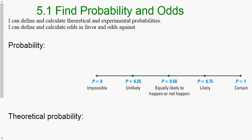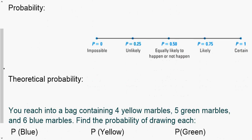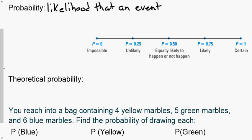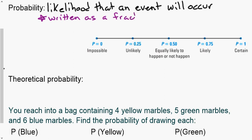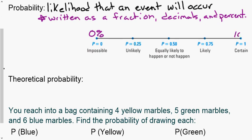We're going to start with the definition of probability — this is the likelihood that an event will occur. We can write this as a fraction, which can then be converted to a decimal or a percentage. Our range goes from zero, which is impossible and also zero percent, all the way to one hundred percent, which is certain.